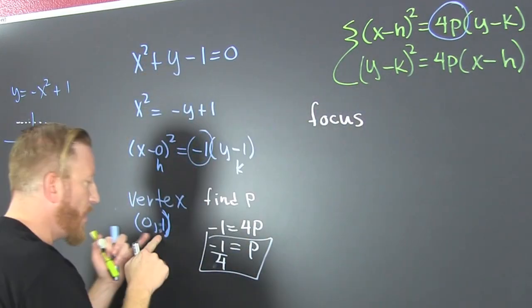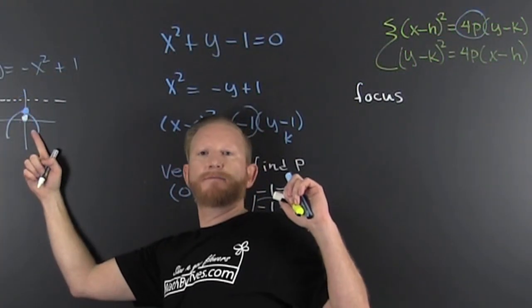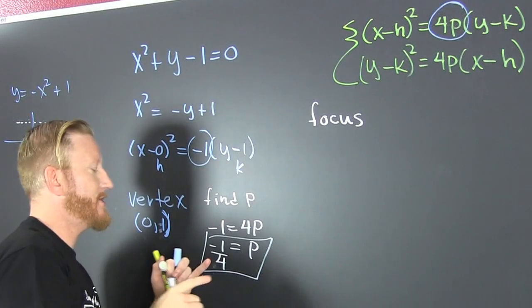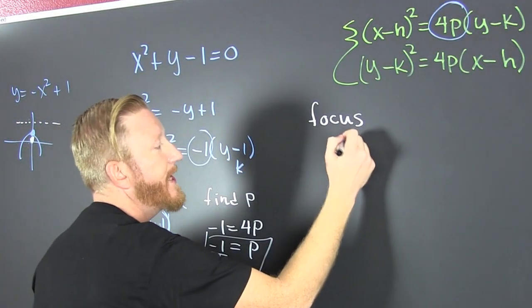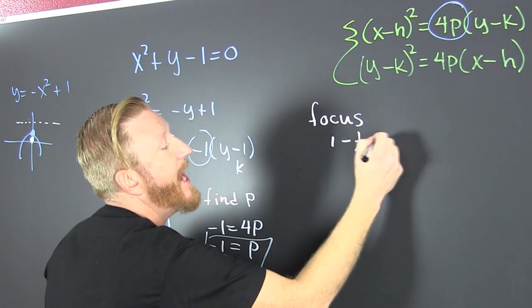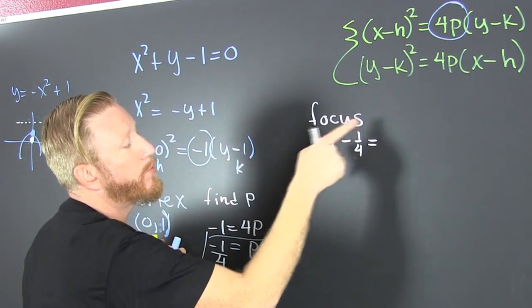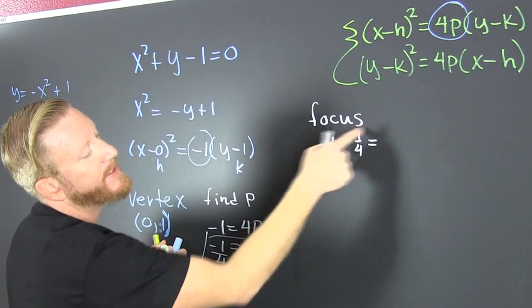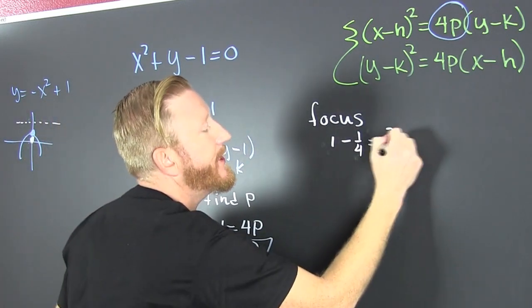I'm going to take that y value, y, because I'm changing my y. So I take that y one and I subtract off my one fourth. And that's, wait for it. What is that? Zip, zap, zo. That's three fourths.